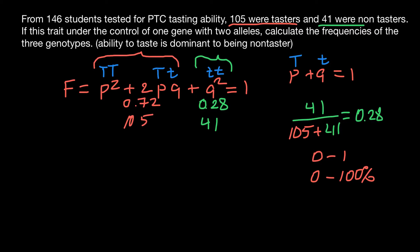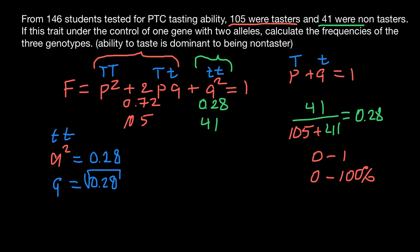The next step is to find the frequency of the recessive allele t. Since q squared stands for the homozygous recessive genotype and its frequency is 0.28, q equals the square root of 0.28. Taking the square root of 0.28 gives us 0.53, which is the frequency of the recessive allele t.